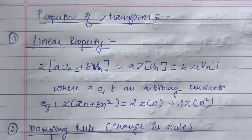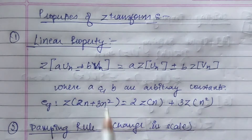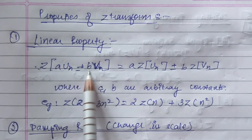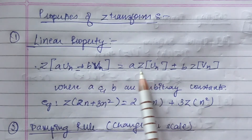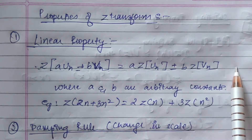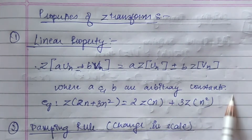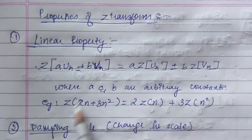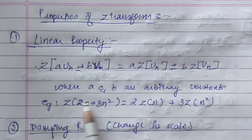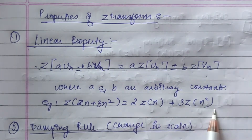Hey guys, in this lecture we will be studying the properties of the Z transforms. First is the linearity property: Z{a·u(n) ± b·v(n)} is equal to a·Z{u(n)} ± b·Z{v(n)}, where a and b are arbitrary constants. For example, Z{2n + 3n²} can be written as 2·Z{n} + 3·Z{n²}.